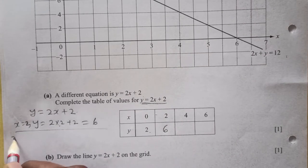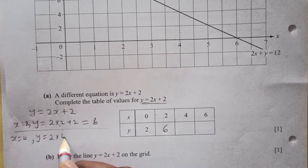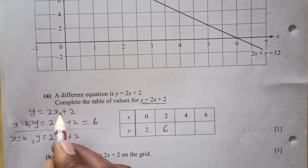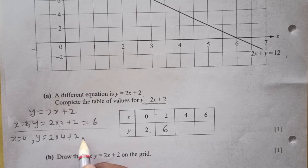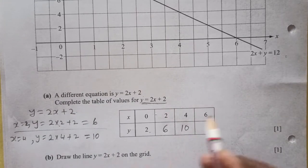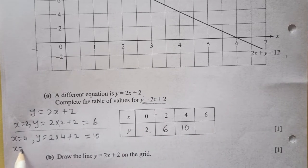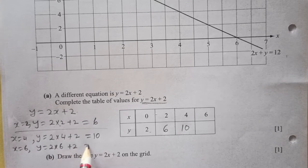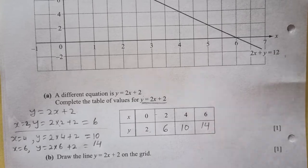When x is 4, y is going to be 2 times 4 plus 2. 2 times 4 is 8, plus 2 is 10. So y is 10. When x is 6, y is 2 times 6 plus 2, which is 12 plus 2 — that is 14. So y is 14.